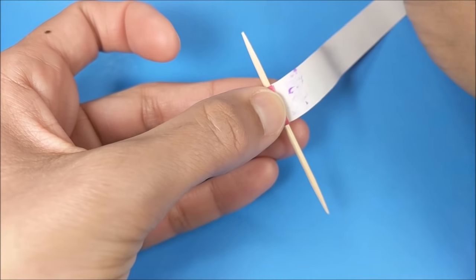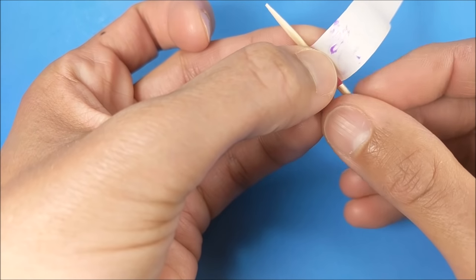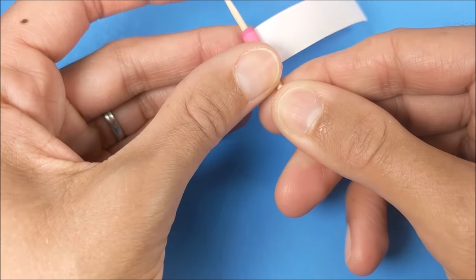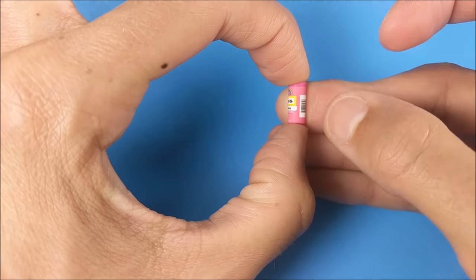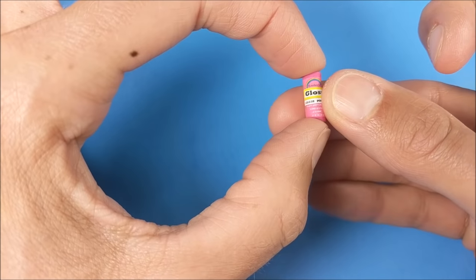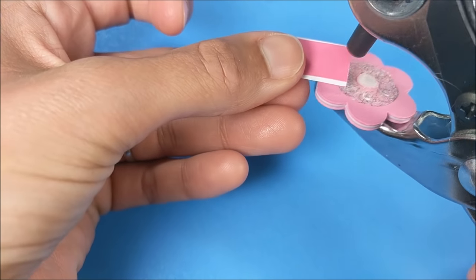Then wrap the long strip around a toothpick, making sure that the writing is on the end. With my excess piece, I use my multi-hole punch to create the top.